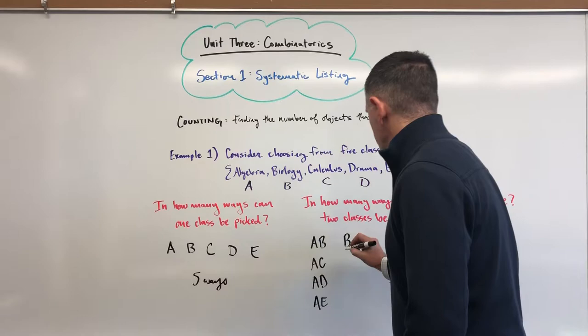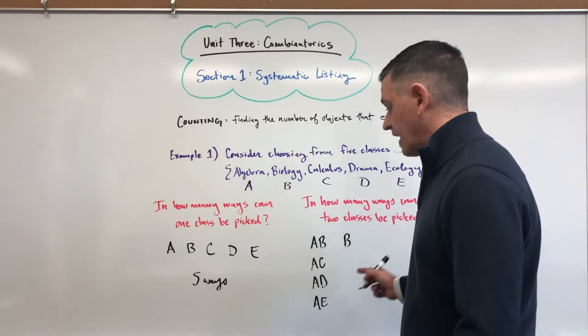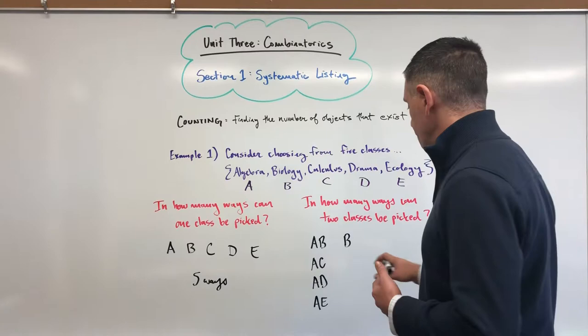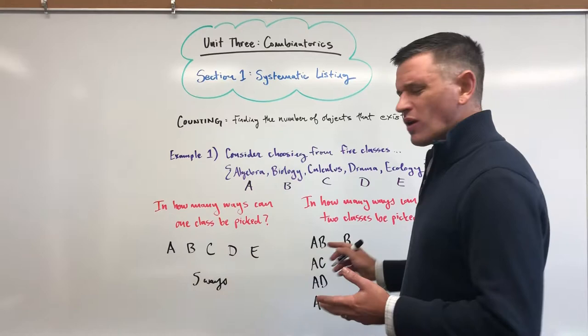But now we want to consider, okay forget about Algebra. What if we take Biology? And now I don't want to write Algebra again. I don't want to say if I said AB, I don't want to now say BA because I've already determined from the context of the problem that the order that I pick these in is irrelevant.